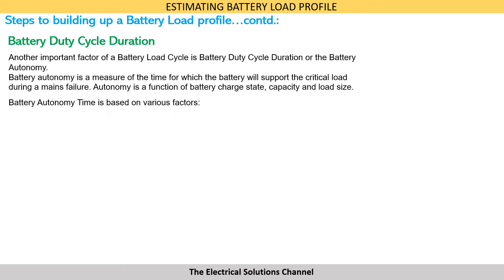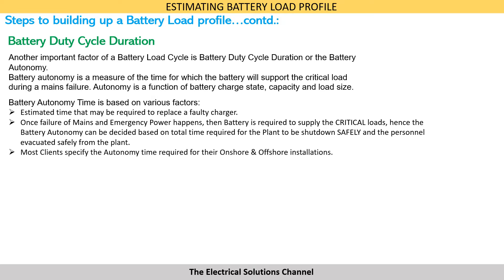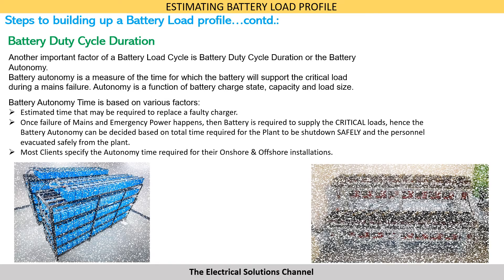Battery autonomy time can be decided based on various factors — for example, the estimated time required to replace a faulty charger, or the total time required for the plant to be shut down safely and personnel evacuated safely from the plant after failure of mains and emergency power. Most clients specify the battery autonomy time required for their onshore and offshore installations.